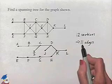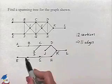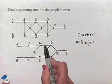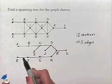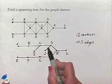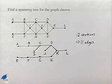Now let's just double check to make sure we have 11 edges. We'll have 1, 2, 3, 4, 5, 6, 7, 8, 9, 10, 11. And so here is a spanning tree for the graph.